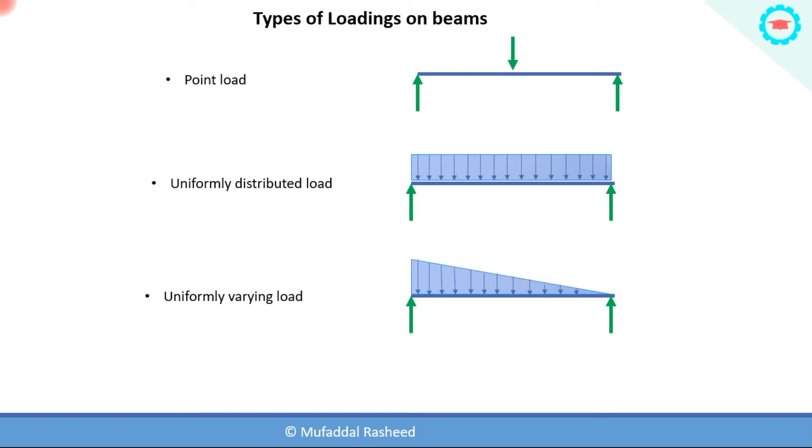You can see here a simply supported beam which is acted upon by a uniformly varying load. At one point the load is maximum, and at the other point the load is zero.